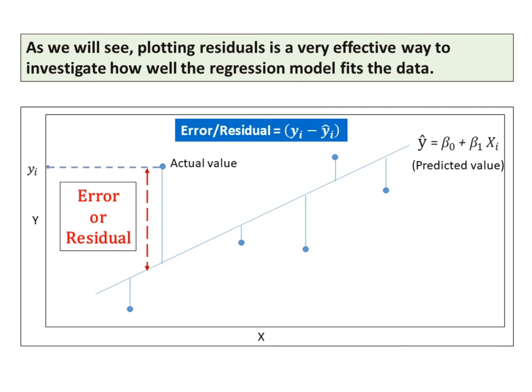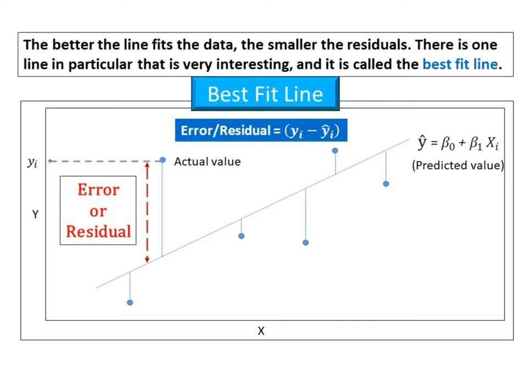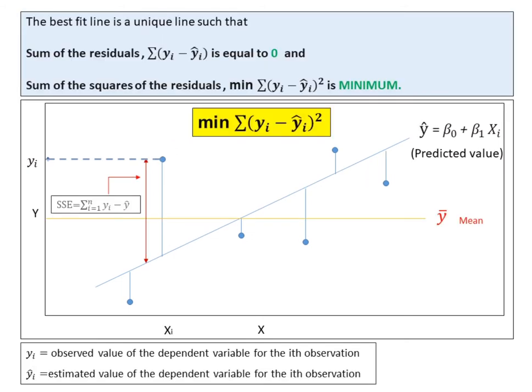The better the line fits the data, the smaller the residuals. There is one line in particular that is very interesting, and it is called the best fit line. This is the line that best fits the given set of data. The best fit line is a unique line such that the sum of the residuals is equal to zero and the sum of the squares of the residuals is minimum.